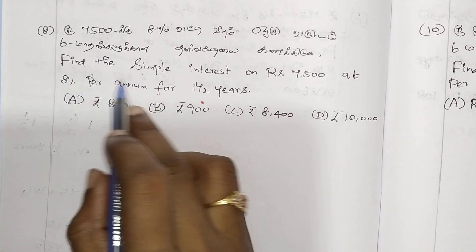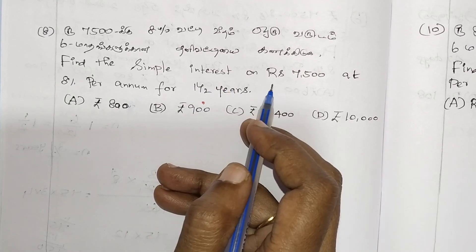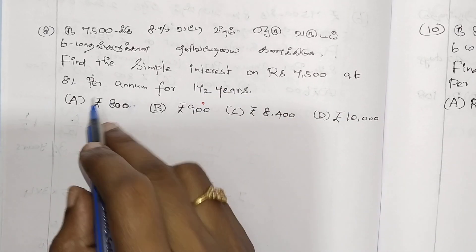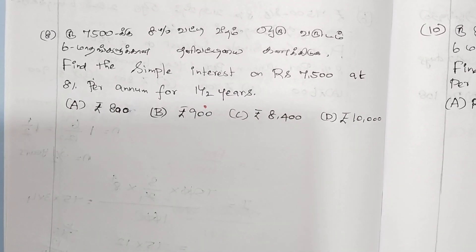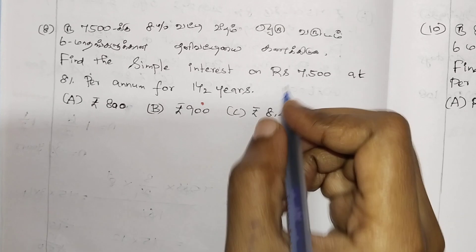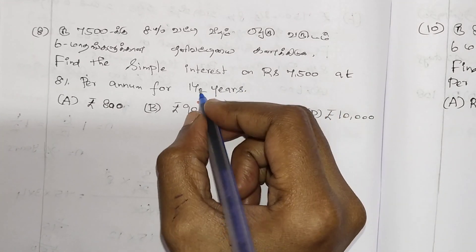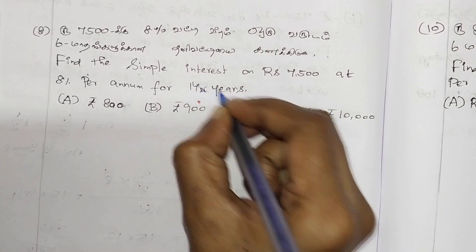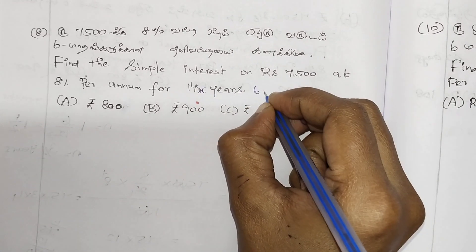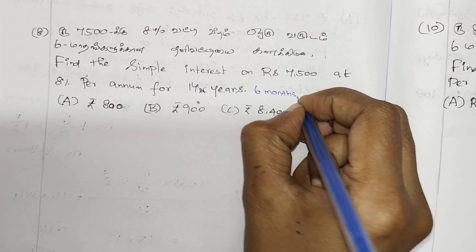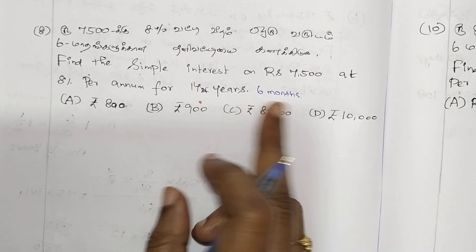Let's check and place the answer in the description below. Find the simple interest on Rs 7,500 at 8 percentage.